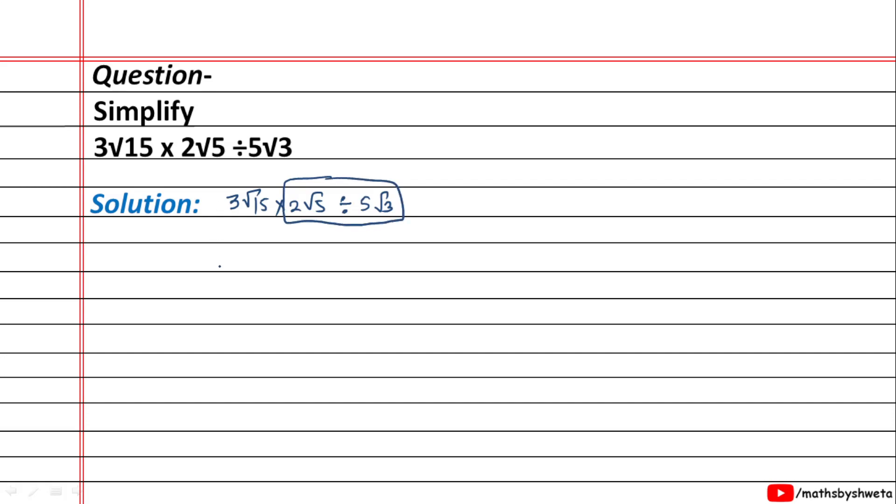We apply BODMAS in this part. Let's start: 3√15 multiply 2√5, change the sign of division into multiplication and take the reciprocal of that number.